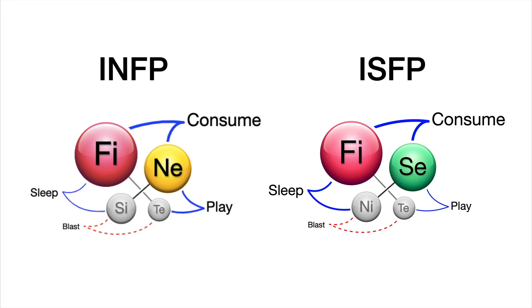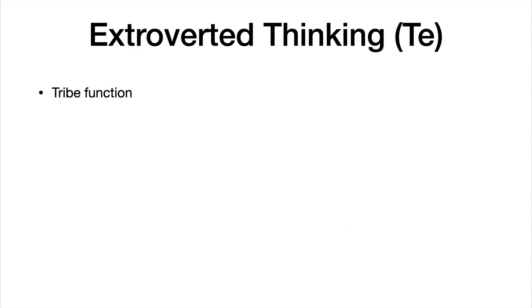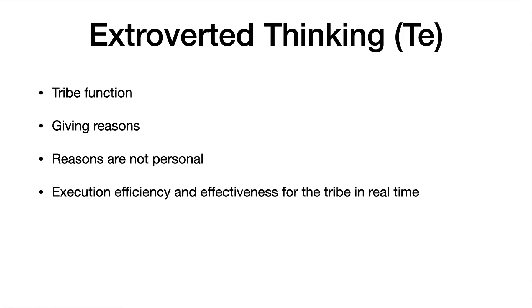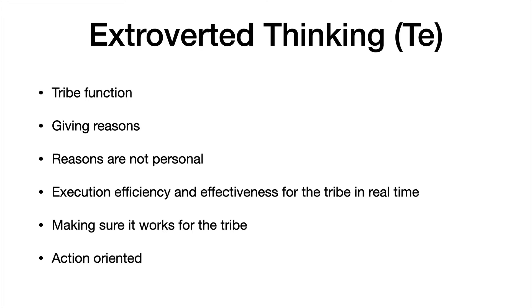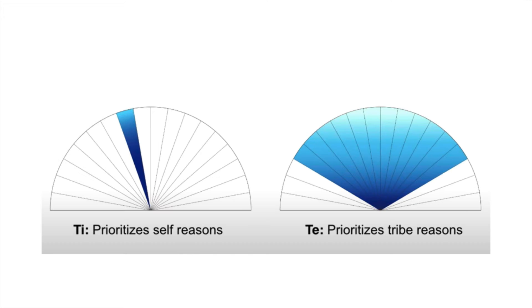Let's first define what TE is. Extroverted thinking, or TE, is a tribe function. It's about giving reasons for the tribe — reasons that are not personal. It's about execution, efficiency, and effectiveness for the tribe in real time, making sure it works for the tribe, and it's action-oriented. Compared to TI, TE has a tribe spectrum on what will work best for everyone, whereas people with TI can see the spectrum but pick what works for them.